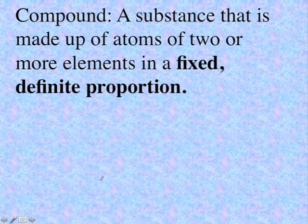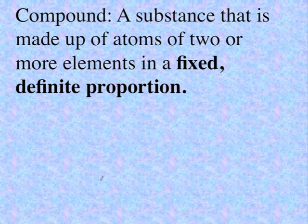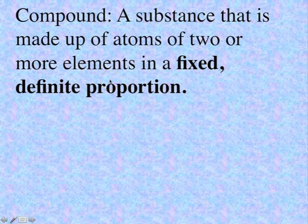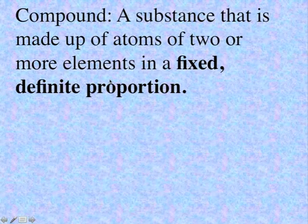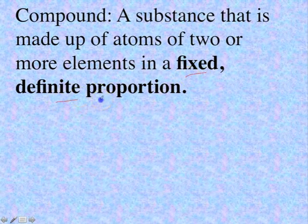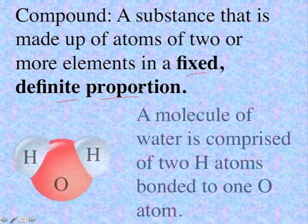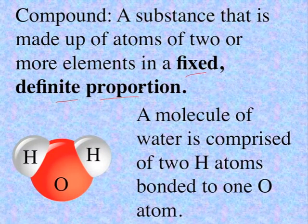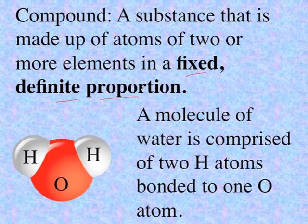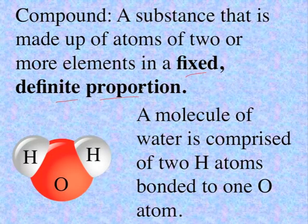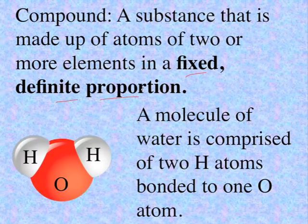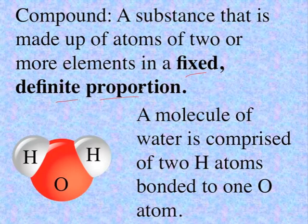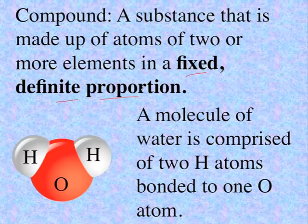Now elements, of course, can combine with one another to form compounds. So a substance that is made up of atoms of two or more elements in a fixed, definite proportion is called a compound. Water, for example, is a compound. It's comprised of two hydrogen atoms bonded to an oxygen atom. Always, if it's water, it's two hydrogens and one oxygen. If it's not two hydrogens and one oxygen, it ain't water. And every pure substance has a unique composition.